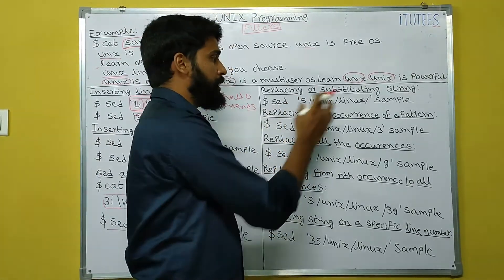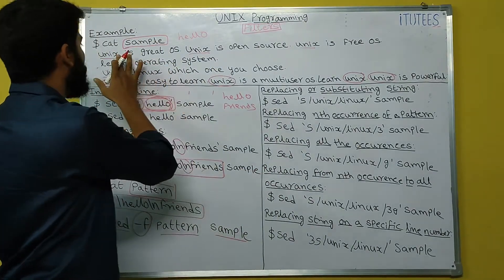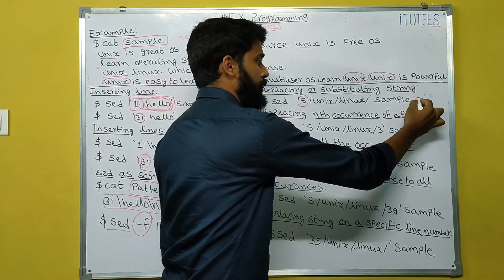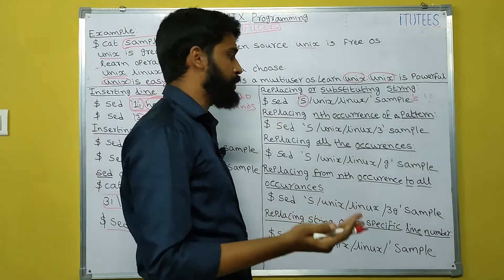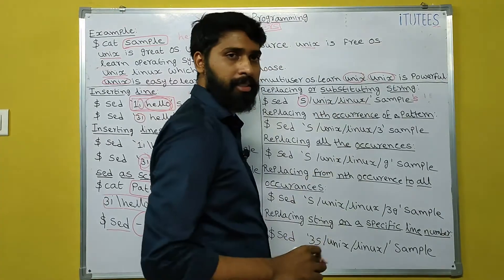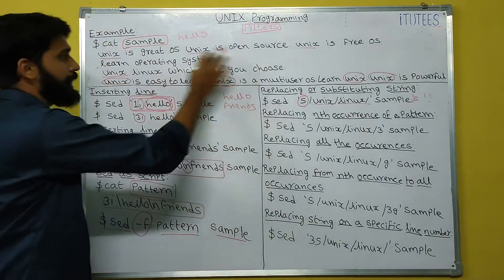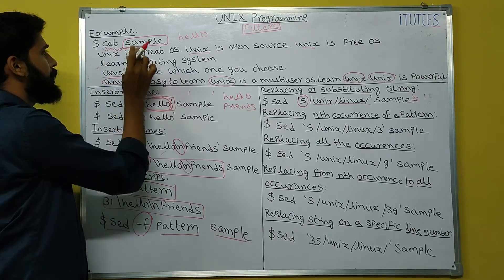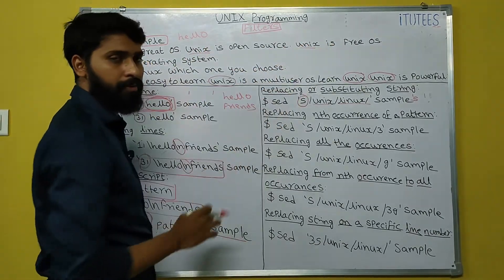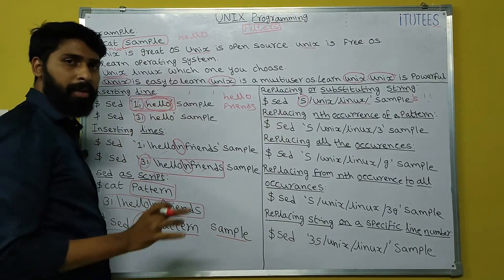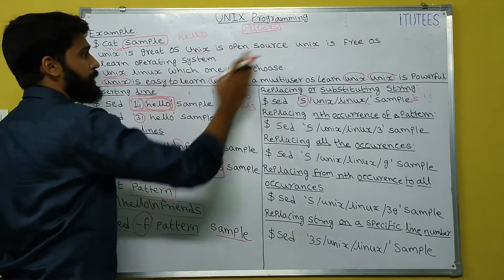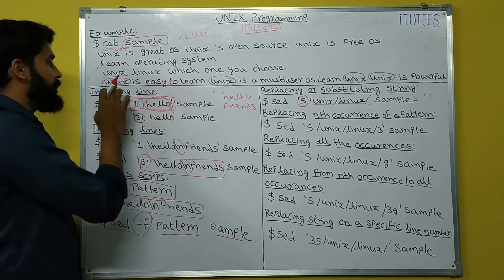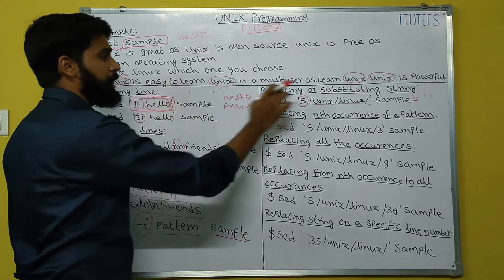Replacing or substituting a string: I want to replace 'unix' with 'linux'. Use: SED 's/unix/linux/' sample. The 's' means substitute. Only the first occurrence of unix in each line will be substituted with linux. So 'linux is great OS' appears in the first line, but the second and third occurrences in lines that have multiple unix words remain unchanged. The actual file is not modified — it is displayed on standard output only.